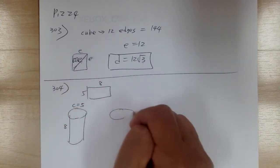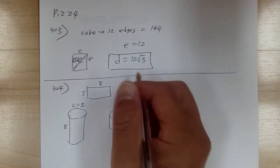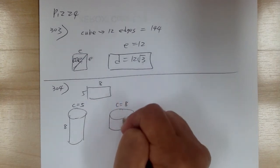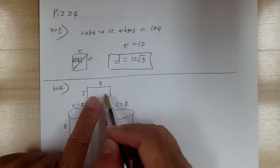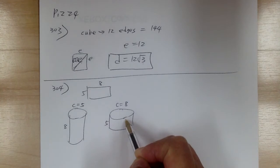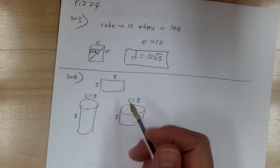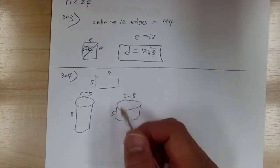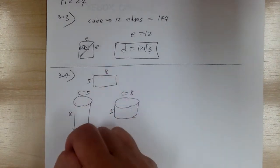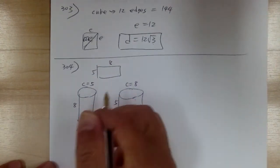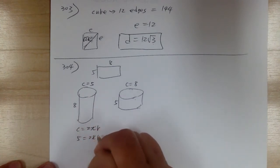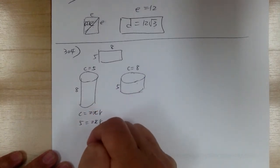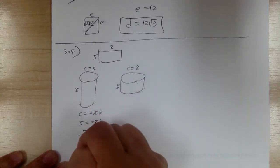The other one, when you roll it, the circumference equals 8 and the height equals 5. So if you put a paper this way and you roll it, it becomes like this. So you're looking for the ratio of the volume. From here, the circumference equals 2πr, and circumference is 5. So 5 equals 2πr. This one, the radius is equal to 5 over 2π.